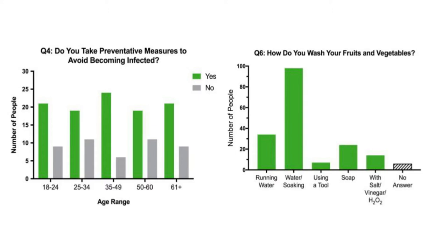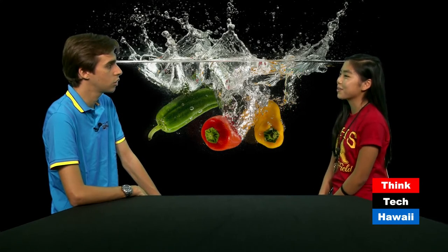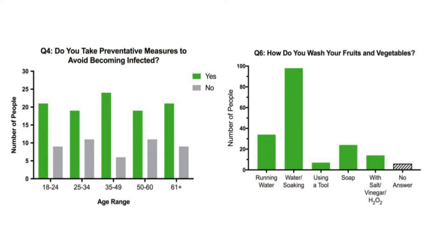You should pay more attention to leafy vegetables. Something interesting is that a handful of people specified soap or salt — some kind of solution to wash their vegetables. This is a popular notion that most people think would be effective, but it's not actually proven to be. You should do it if it makes you feel more comfortable, but just know that running water is the most effective method, so you should make sure to do that.